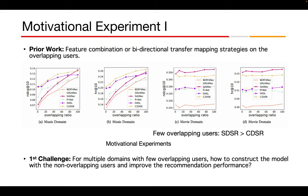In the mobile domain, SASRec, which is a single-domain method, achieves the best performance. Similarly, in the music domain with a 100% overlap ratio, SASRec outperforms DTCDR. This is attributed to the fact that existing CDSR methods rely on overlapping users to construct their models or transfer information across domains, which leads to a decrease in performance in a low-overlapping scenario. Hence, this finding serves as a motivating factor for us to design a high-performance CDSR model that can be applied in the open-world environment.